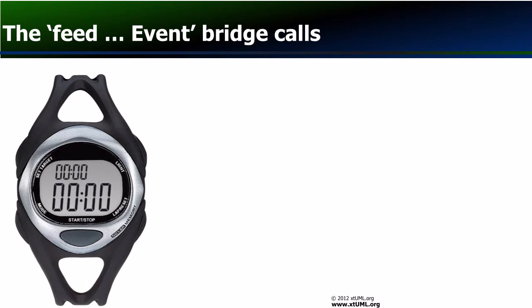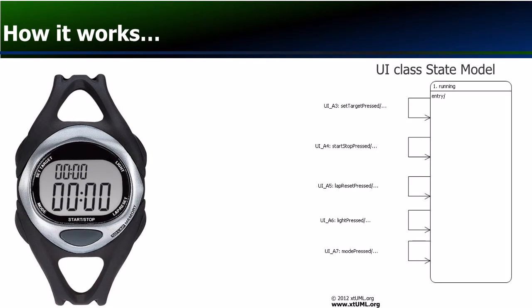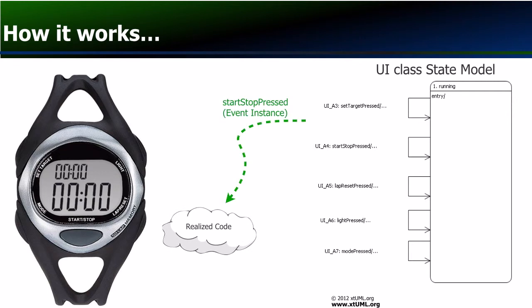Instead, we use a modeling trick to send event instances to the Java external entity implementation. The GUI bridge class caches these event instances until a button is pressed. This is what the feed bridges are for — they are used to pass the pre-created events to the realized Java class.